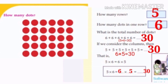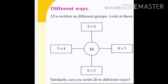Same answer can be written in different ways. Look: 2 into 6 is equal to 12. 6 into 2 is equal to 12. 4 into 3 is equal to 12. And 3 into 4 is equal to 12. The answer is the same. Similarly, can you write 20 in different ways? You should do this as an exercise in your notebook.